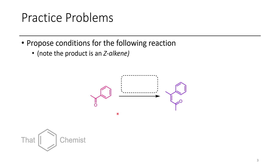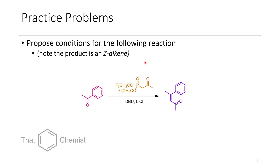In the next problem, I want you to propose conditions that would give you the Z alkene product. If we wanted to use an HWE reaction, we would normally get the E alkene. So if we want to get the Z alkene — Zusammen — we would have to use the Still modification to the HWE. You could probably use a Wittig reagent as well, however I'm not 100% sure you'd get the Z alkene in that case. So we could do the Still modification.